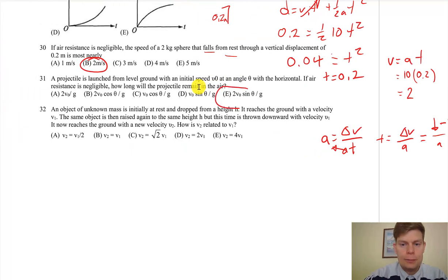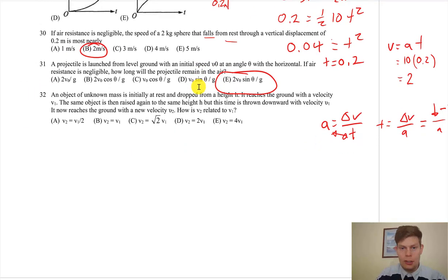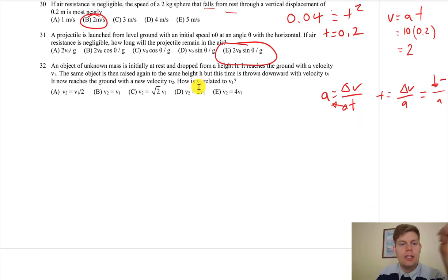And then the last sucker—oh, and it's not easy, whatever. So you've got some object of unknown mass initially at rest. When we drop it from height h, it reaches the ground with velocity v1. The same object is then raised the same height h, but this time started downward with velocity v1, and it now reaches the ground with velocity v2. How is v2 related to v1?